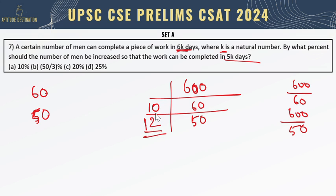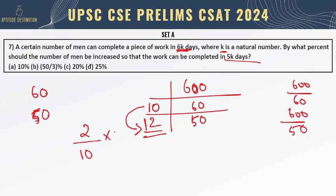He has to do 12 units every day to complete 600 units of work in 50 days. Now all we have to do is find the percentage increase from 10 to 12. From 10 to 12 there is an increase of 2, so on 10, what is the percentage? It's 20%. Therefore, option C is the right answer.